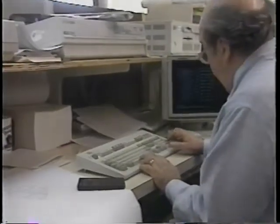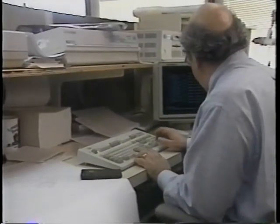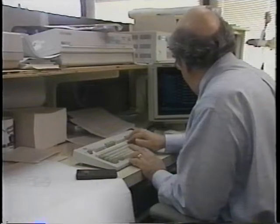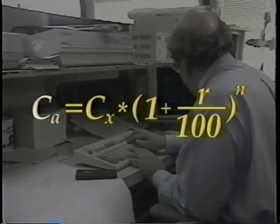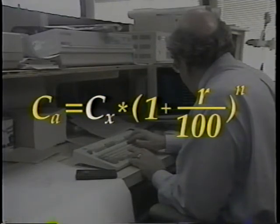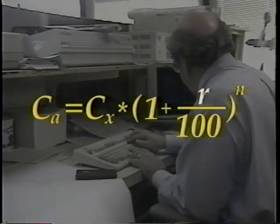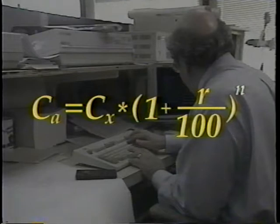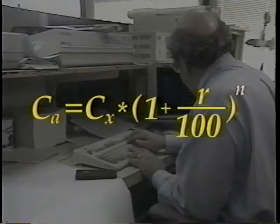By using a consumer price index, Bill can calculate current year costs. Here's the formula: C sub A is the current year cost per accident. C sub X is the cost of accidents in previous year X. R is the annual rate of growth in accident costs in percent. And N is the number of years of growth — in other words, the difference between current year and previous cost year.